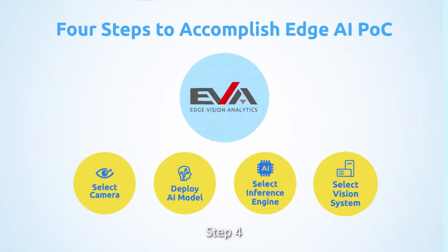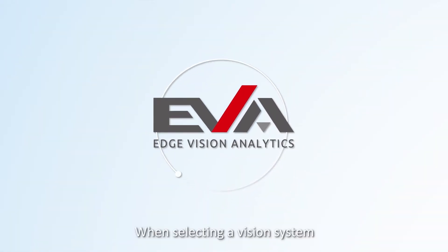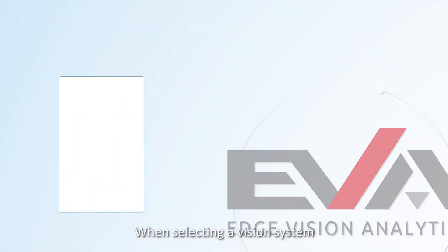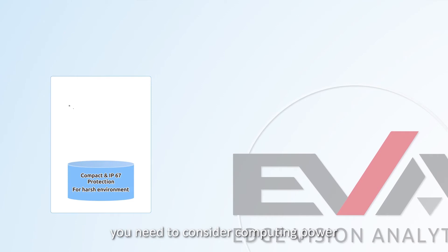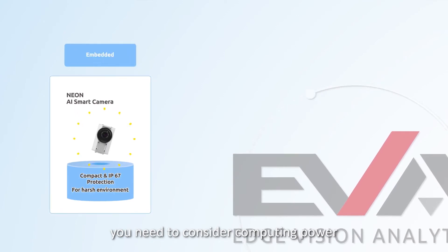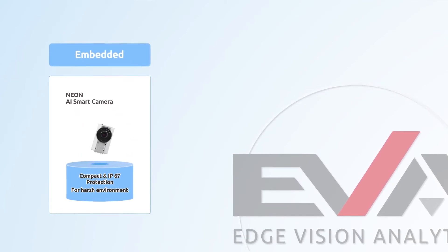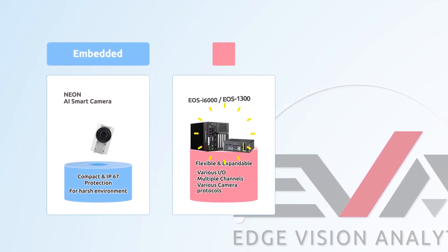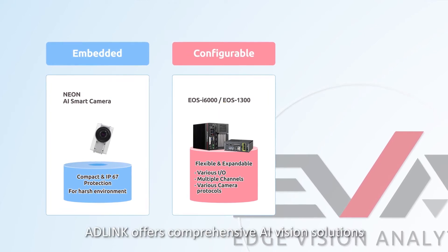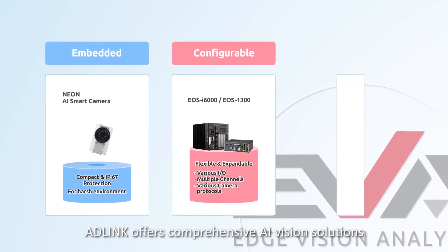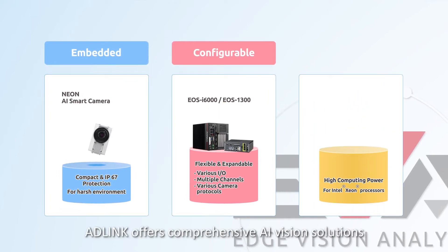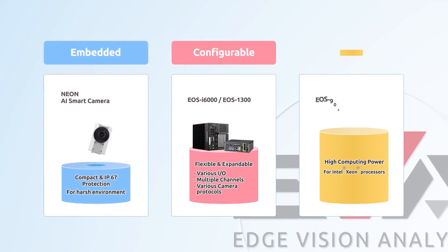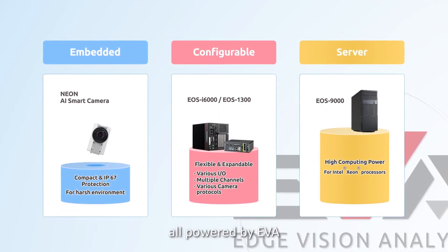Step 4: Select a vision system. When selecting a vision system, you need to consider computing power, the power supply, and even thermal solutions. AD-Link offers comprehensive AI vision solutions, all powered by EVA.